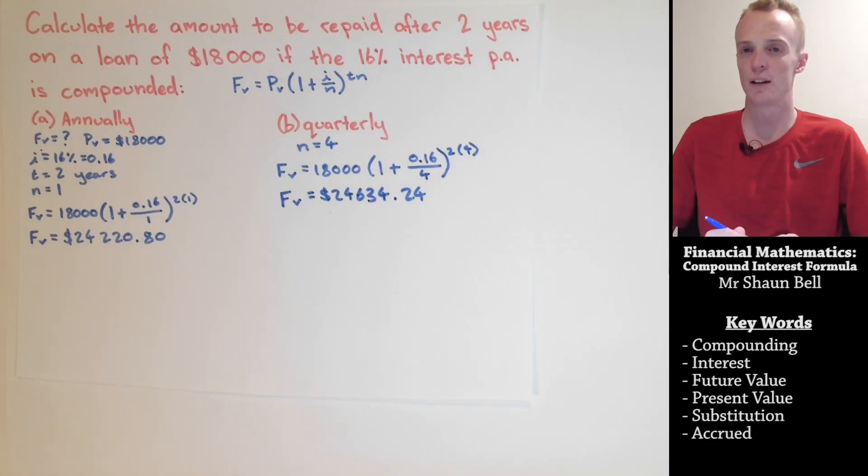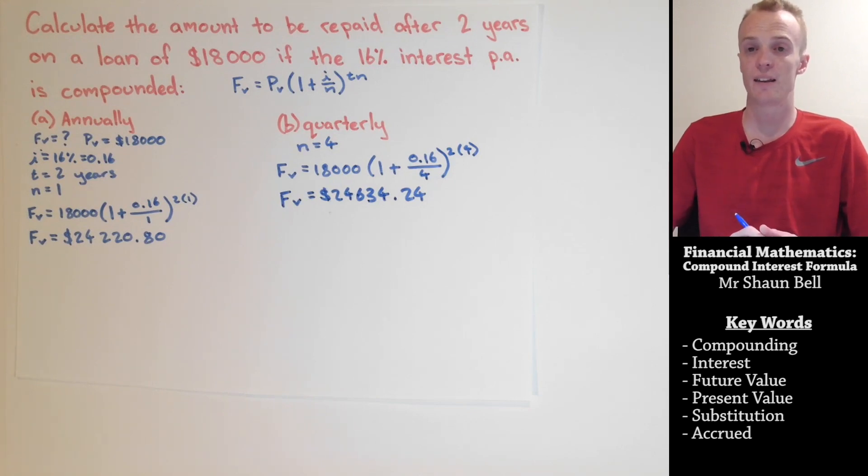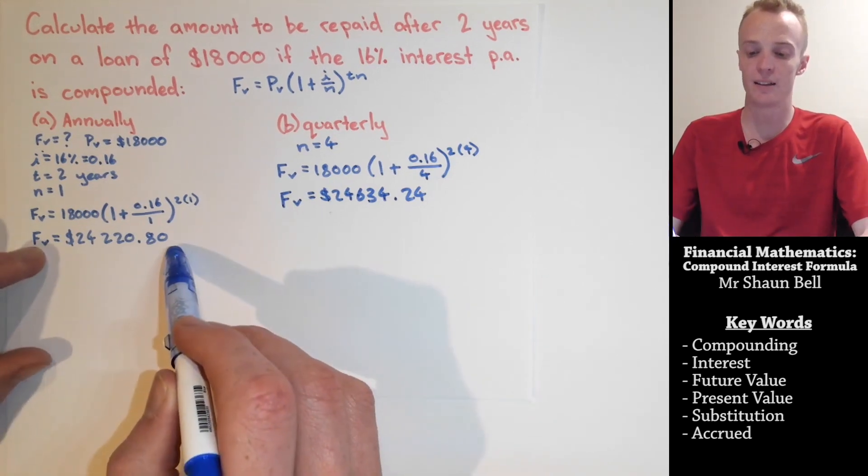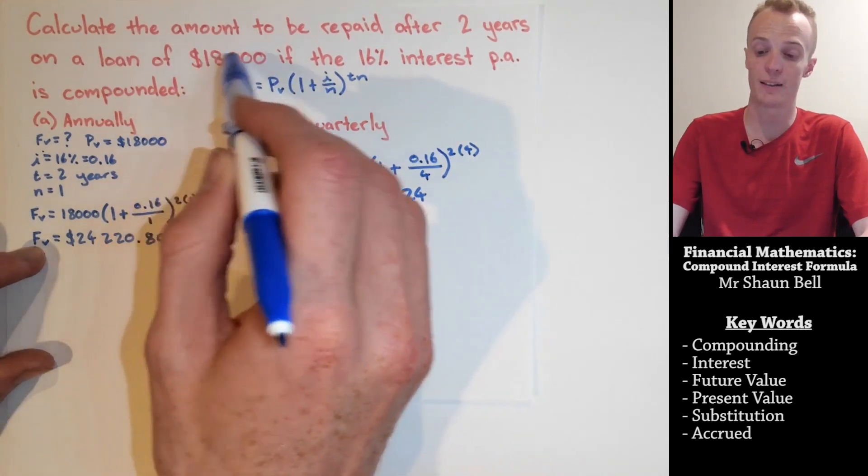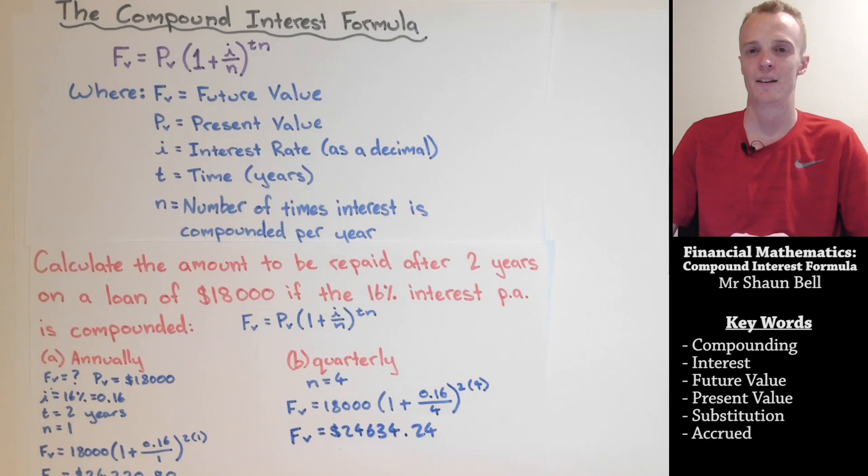Now, it's really important to understand here that this formula calculates the final value of the loan, and not the interest that has accrued. If you want to calculate the interest, you need to take this final value and subtract the initial amount that you took out in the loan.